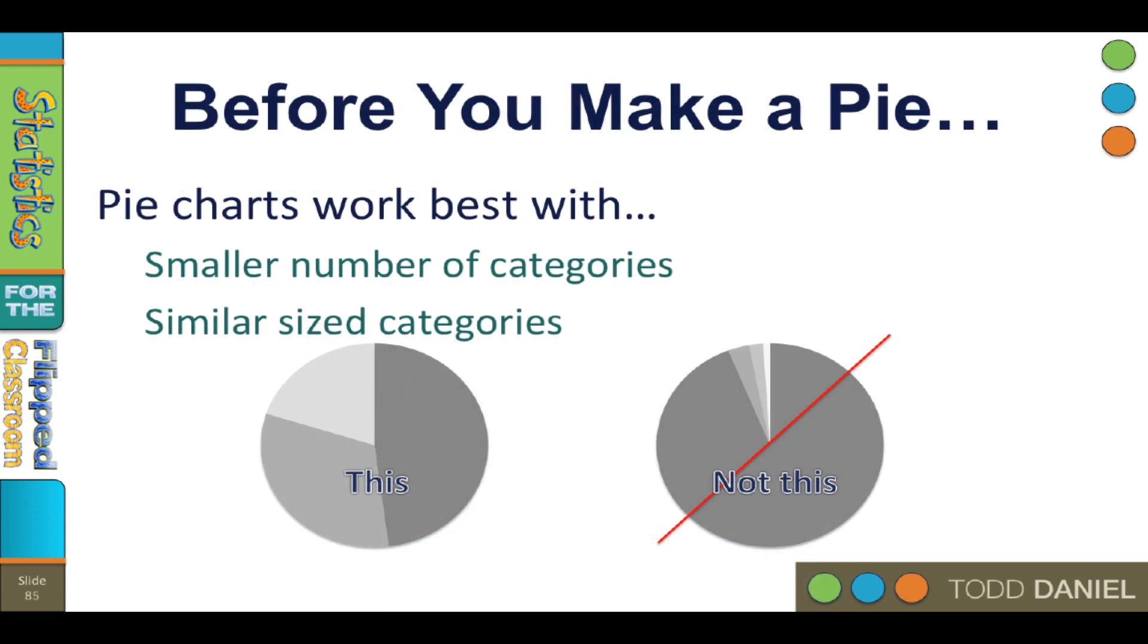Now pie charts work best with a small number of categories, five or fewer, and similar size. So don't use pie charts when one category dominates and the rest are divided into multiple tiny slices. You can use lines or dots to shade the slices, but you cannot use color per the APA style manual 6th edition.